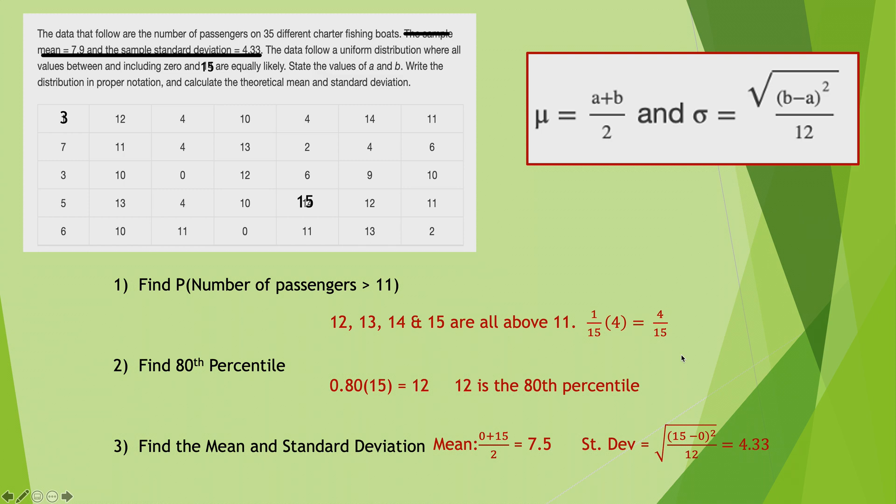Find the mean and the standard deviation. Well, the mean formula says A plus B over 2. We already said A was 0, B was 15. Add them up, divide by 2, I get 7.5. Remember, A is always the first number, B is always the last number or the highest number. A is the lowest number.